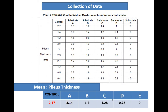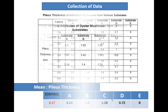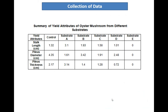In terms of pileus thickness, the control substrate has the highest value. This is the summary of yield attributes of oyster mushroom from different substrates.